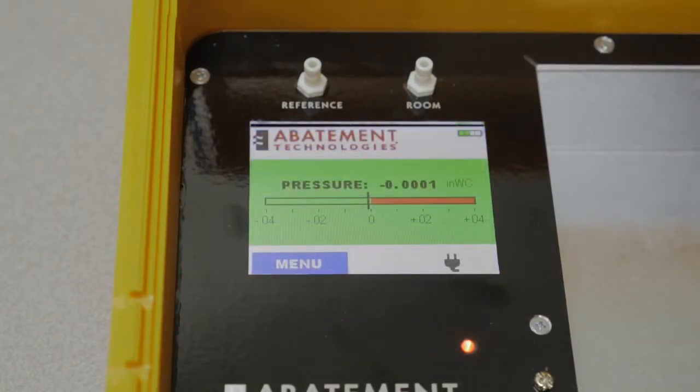The main display of the pressure monitor is the pressure display. It contains the current pressure information for the area being monitored, a silence button, and a menu button. We'll start by setting the date and time.